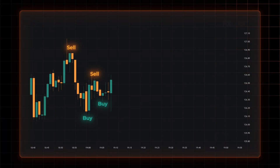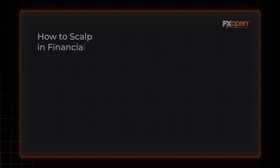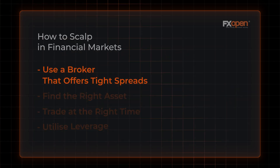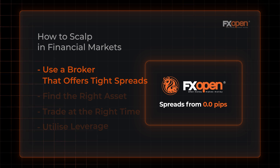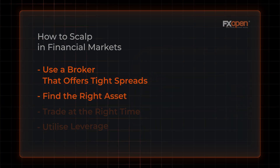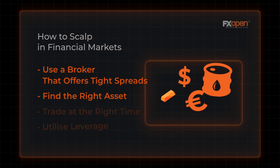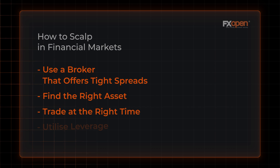Scalping is a popular strategy employed by day traders around the globe. To scalp in financial markets, use a broker that offers tight spreads. At FXOpen, you can start trading with spreads from 0.0 pips. A scalper also needs a market that exhibits large trading volumes on short-term time frames.